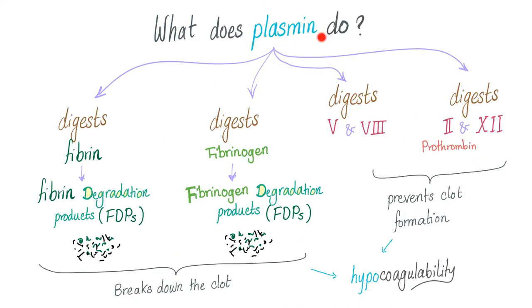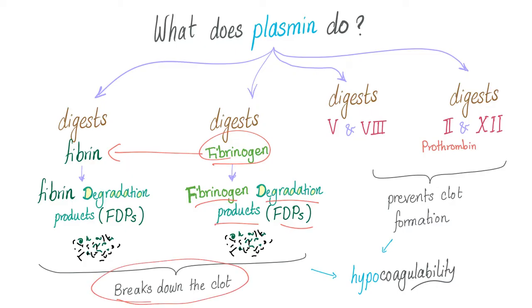If you meet plasmin and ask what it does for a living: I digest fibrin into fibrin degradation products. And that's not enough — I also digest fibrinogen into fibrinogen degradation products, because if I leave it alone it's going to become fibrin. And I'll prevent new clot formation — I'll digest factors 5 and 8, and also factor 2, which is prothrombin, and factor 12.